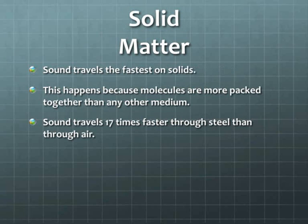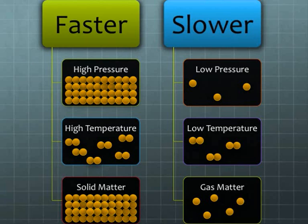The last one is solid. It travels faster than anything because the molecules are even more packed together. It travels about 16 times faster in steel than in air. This graph shows how certain characteristics like pressure, temperature and matter affect the speed of sound.